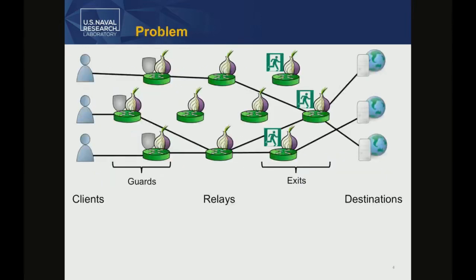Let me talk about the problem. TOR provides anonymous communication using roughly a system architecture where you have users, a network of relays, and users construct circuits through a sequence of those relays to get to destinations. There are guards that users choose for the first hop, and there are exits that allow users to exit the network and reach a destination.